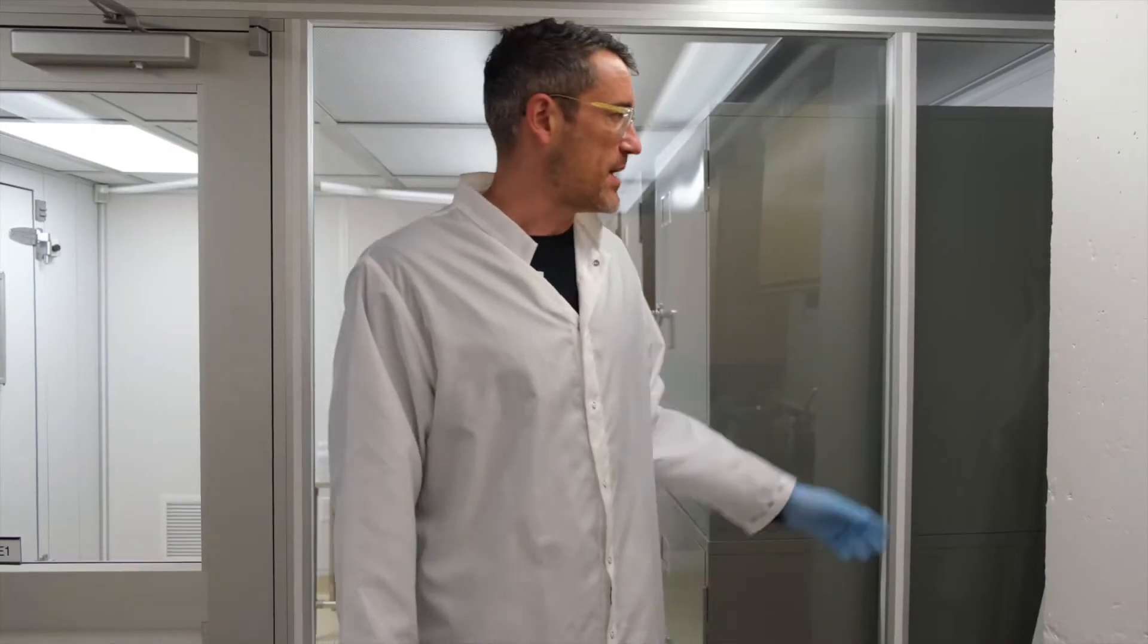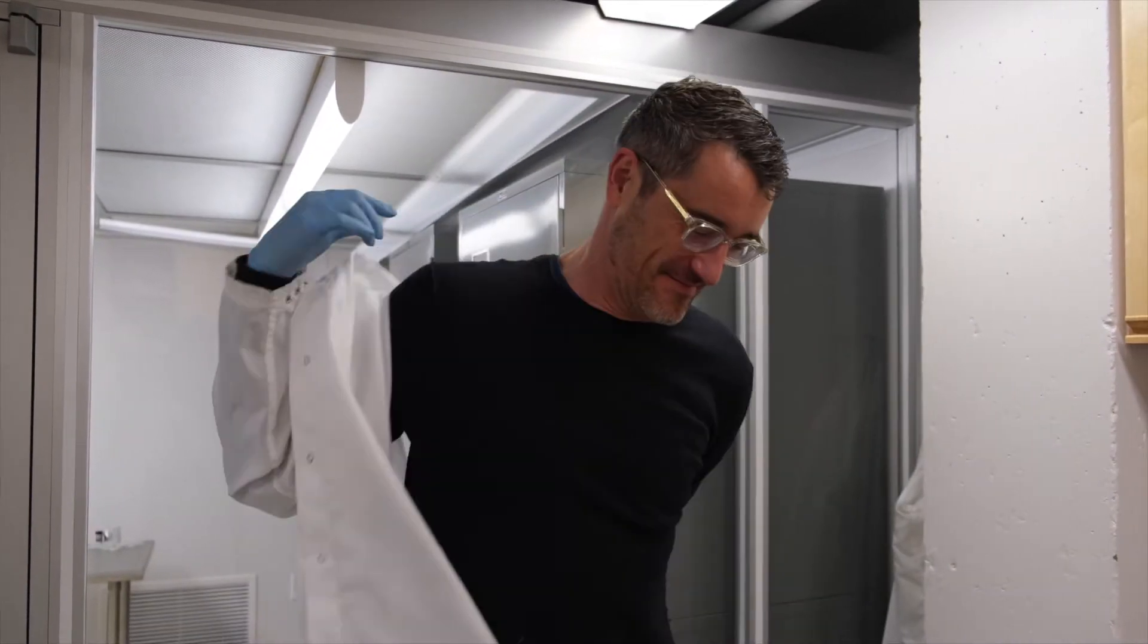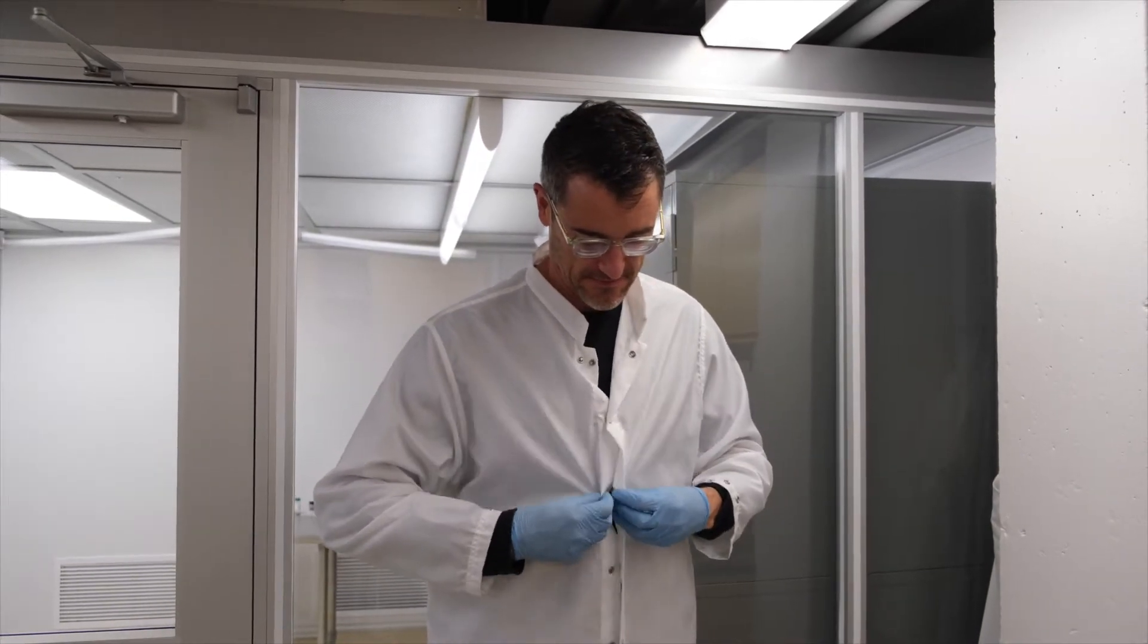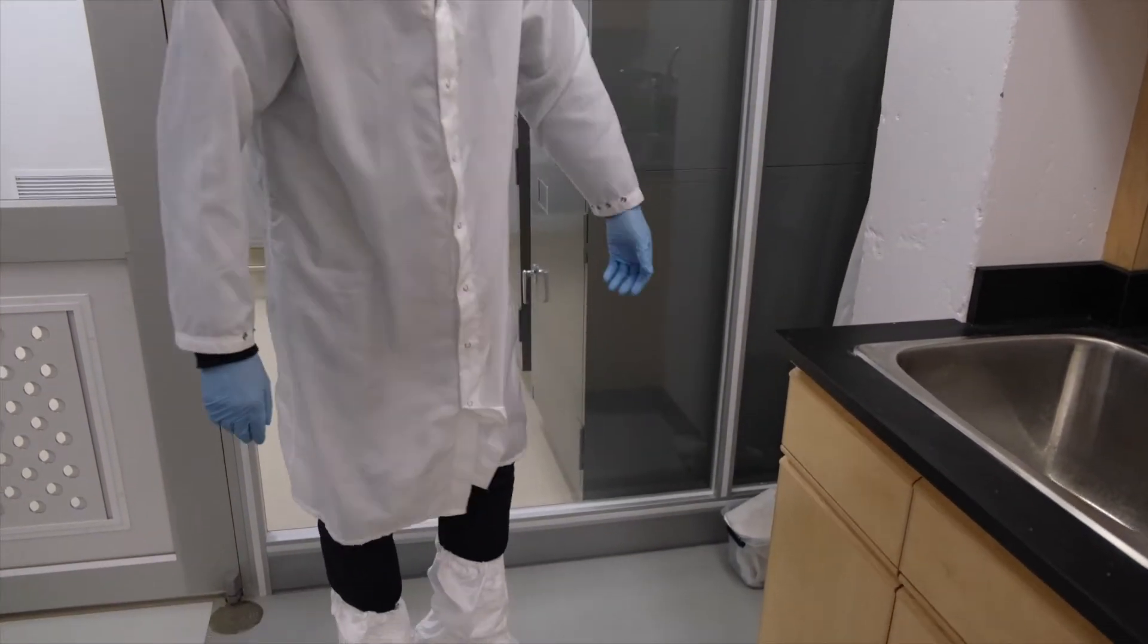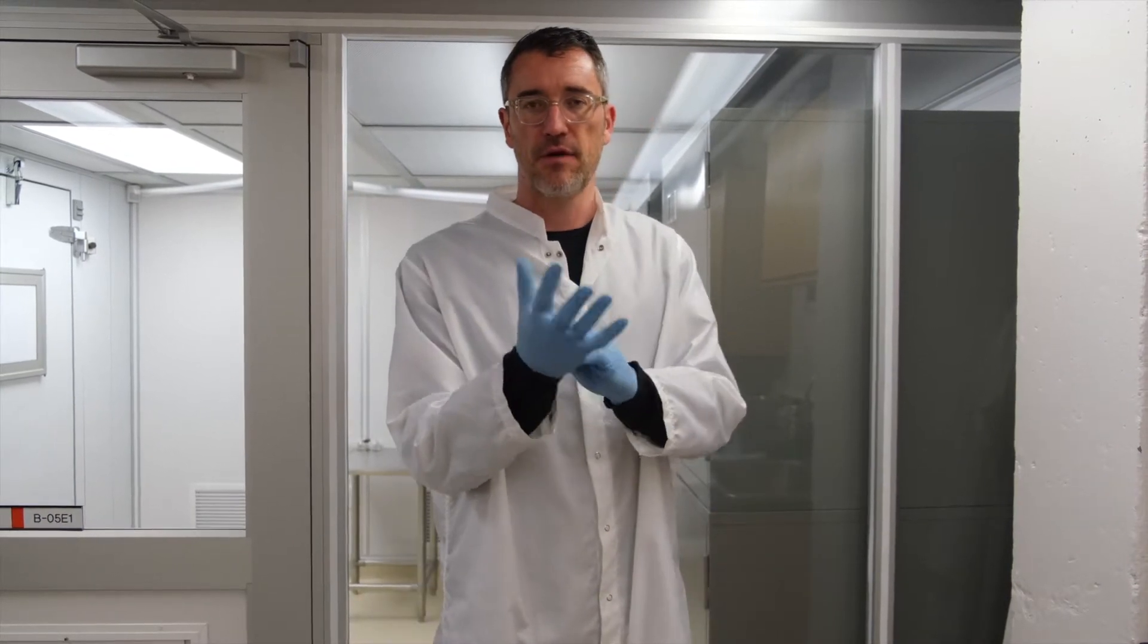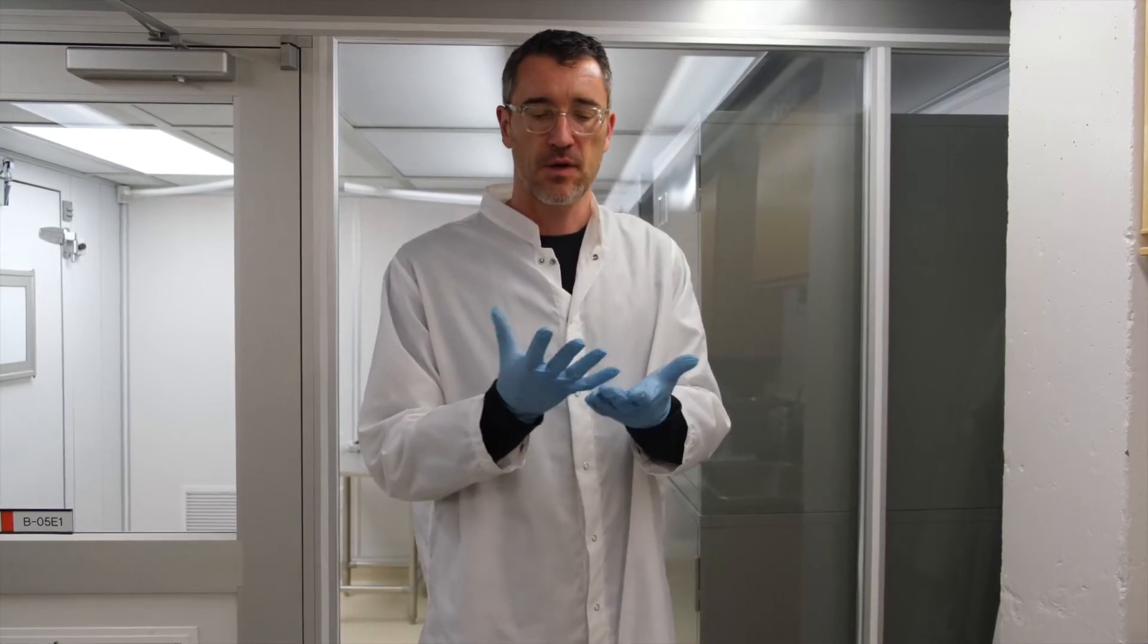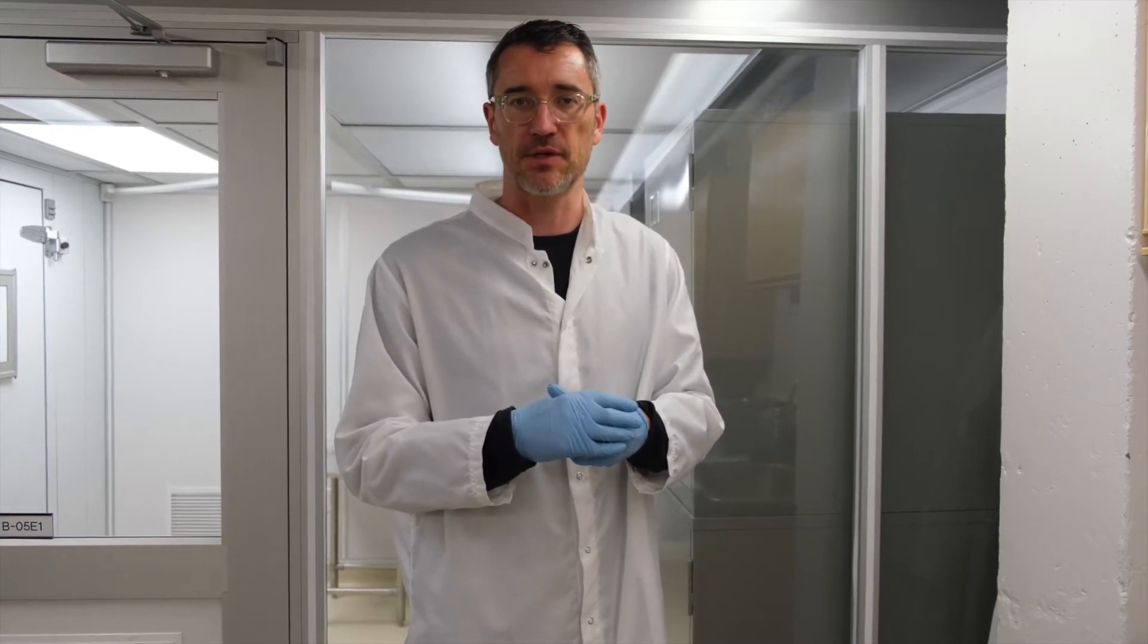When we gown up, we put the gown on over top of all of our regular clothing and make sure it's all snapped up. Then we take the booties and put those on over our shoes to prevent dust and dirt from getting into the environment. And we also make sure we have a pair of latex or nitrile gloves, which keeps the finger grease from our hands from getting onto the samples or into the facility.